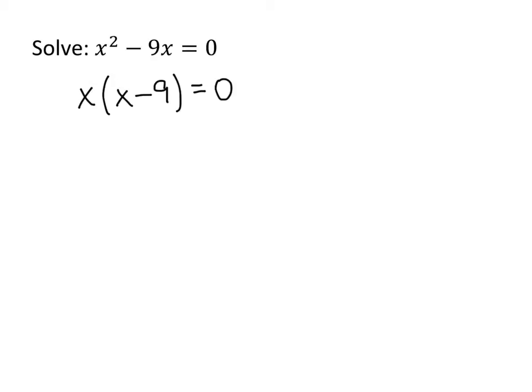So how does that help? Well, because we have a 0 on the right-hand side, and because we have a factored expression on the left-hand side, what this is telling us is that when we multiply these two numbers together, x times x minus 9, the result is 0.